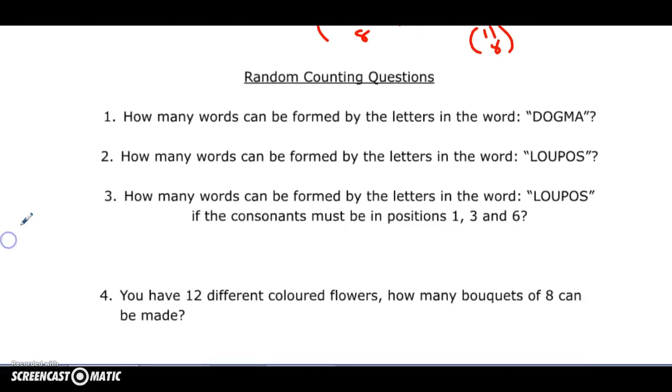How many words can be formed by these letters here? Just 5 factorial. This one here is six letters but there's a repetition of the O's, so you need to divide by 2 factorial. If the consonants stay where they are and the vowels stay where they are—I think I made a mistake here, this should be 4—3 factorial ways to line up the three consonants, there are three vowels and you're going to line them up in 3 factorial ways, but you have two O's so you have to divide that by 2 factorial.